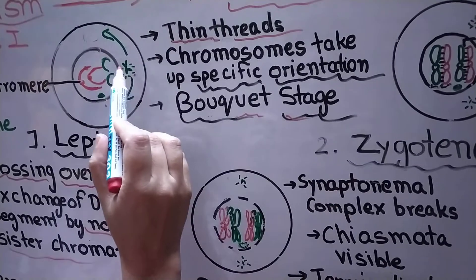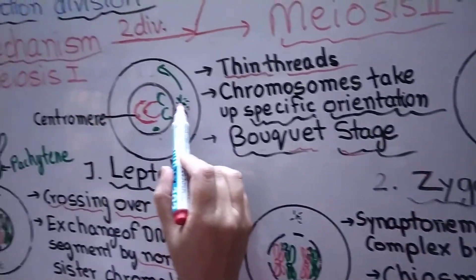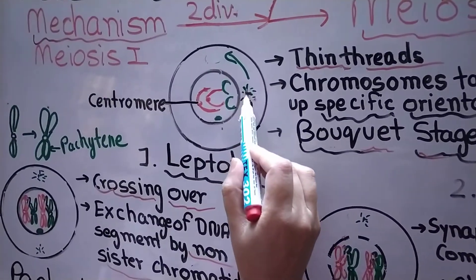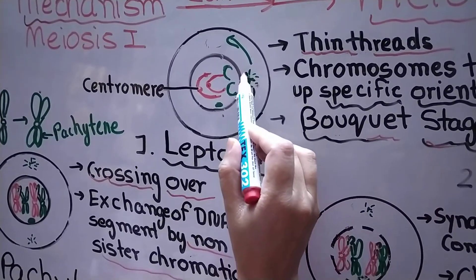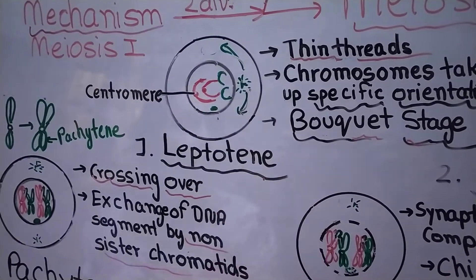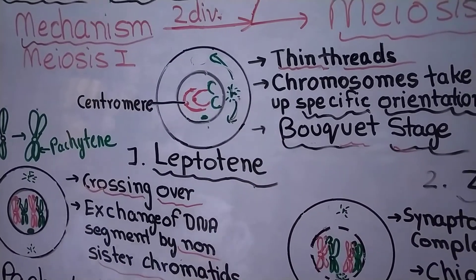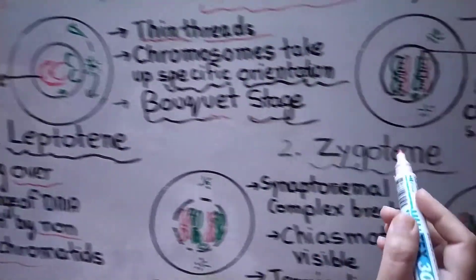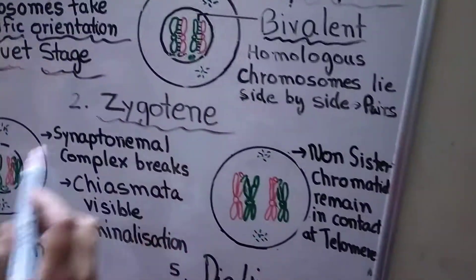Then the centrosome splits — the centriole splits into two and they start moving towards the opposite poles. Then we come to the next stage.